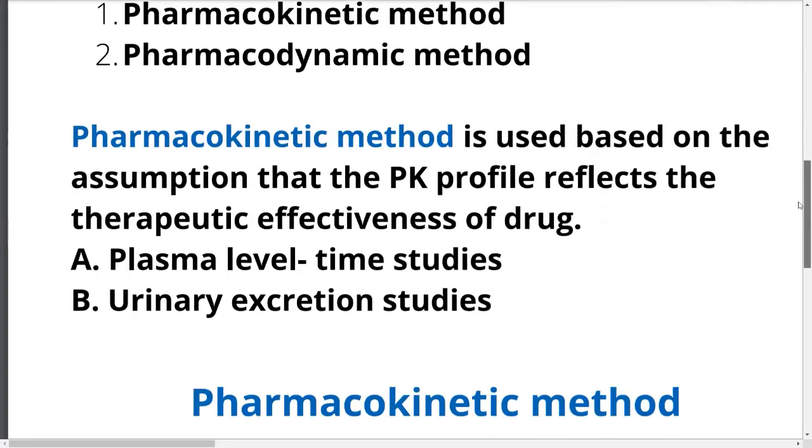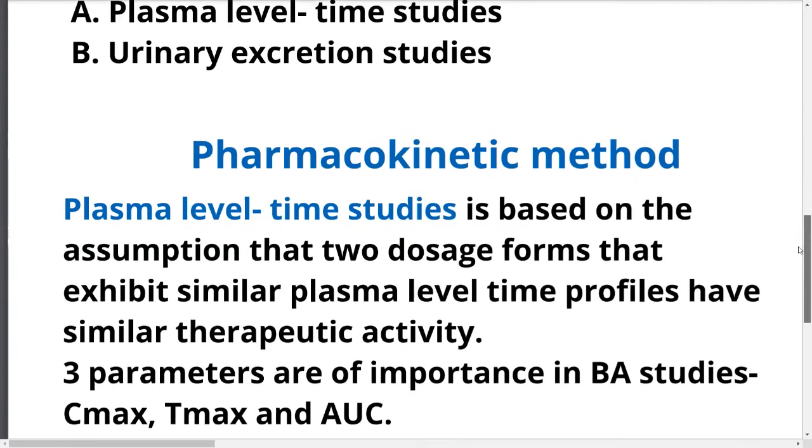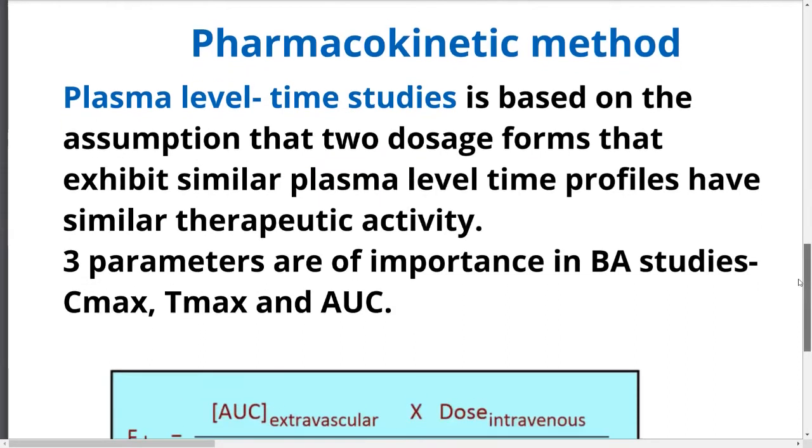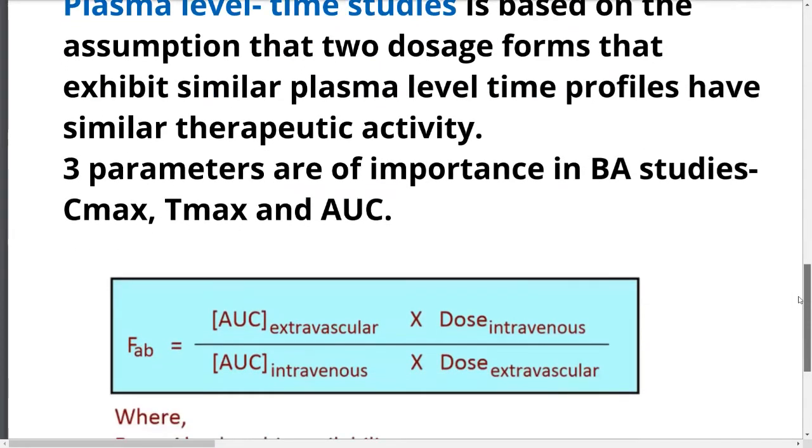Plasma level time studies are based on the assumption that two dosage forms that exhibit similar plasma level time profiles have similar therapeutic activity. The three parameters of importance in bioavailability studies are maximum concentration Cmax, Tmax, and AUC.